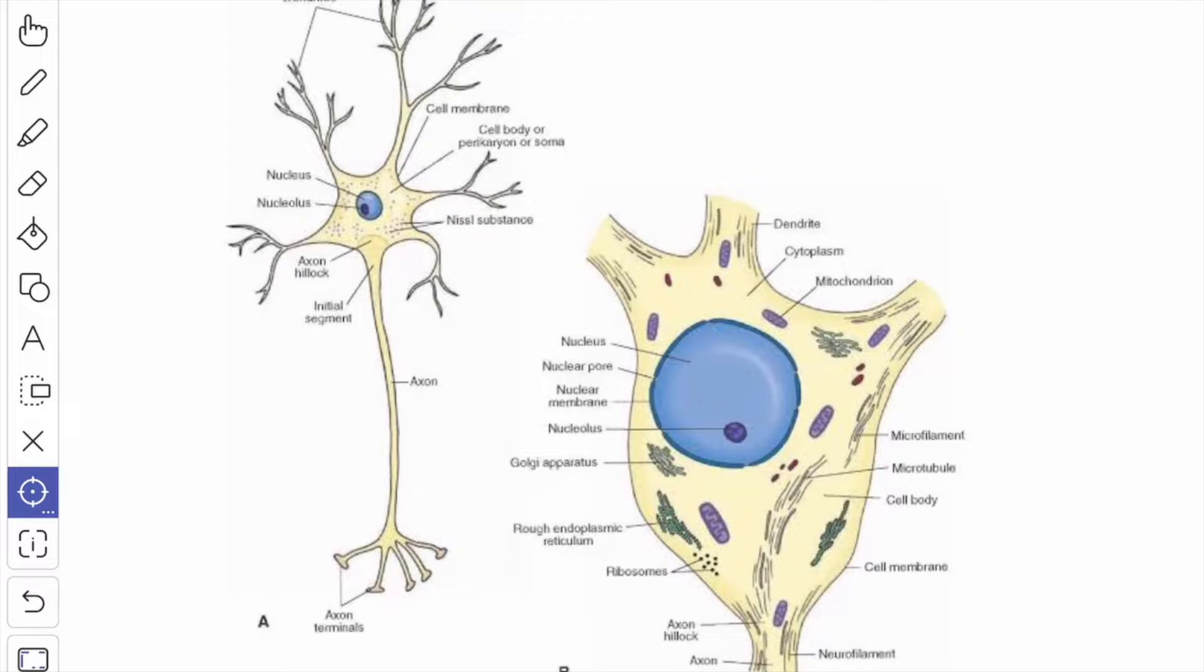Nissl bodies are composed of closely packed ribosome granules combined with RNA and attached to the rough surfaced endoplasmic reticulum. These bodies help synthesis of new proteins and enzymes to meet up the metabolic demands of the neurons and maintain a continuous axoplasmic flow to the end of the axon.